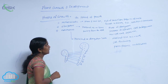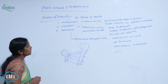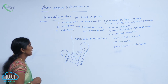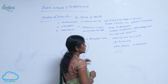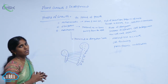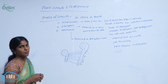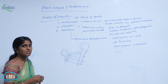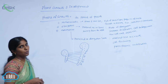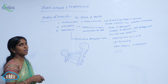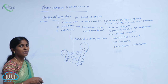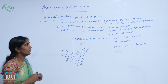The period of growth consists of meristematic, elongation, and maturation phases. Where is the meristematic phase present? The meristematic phase is present at shoot and root tips. There, meristematic tissues are abundant.